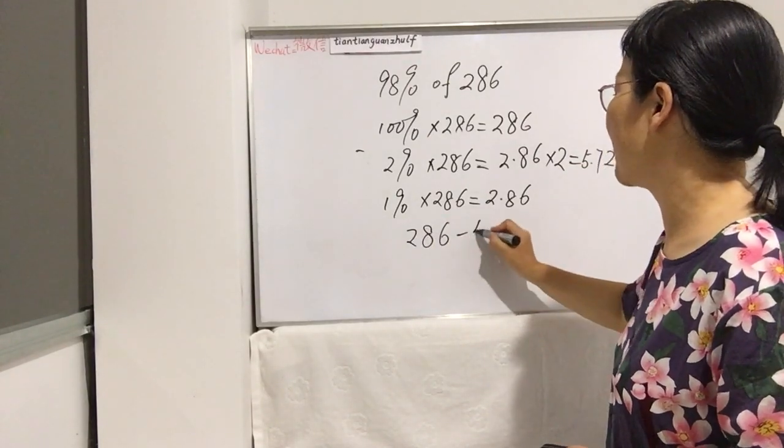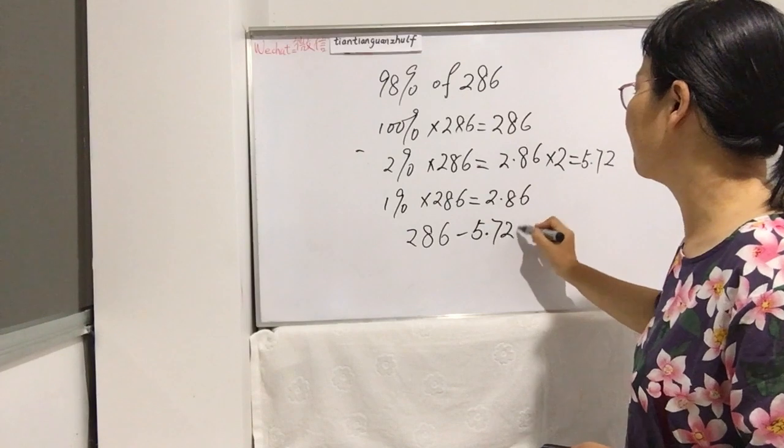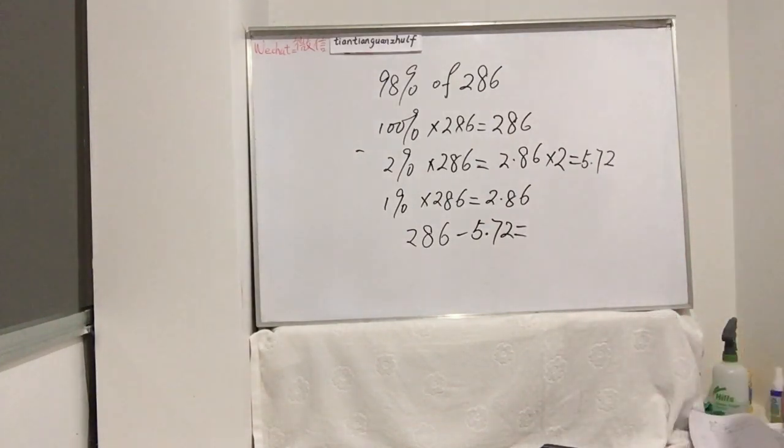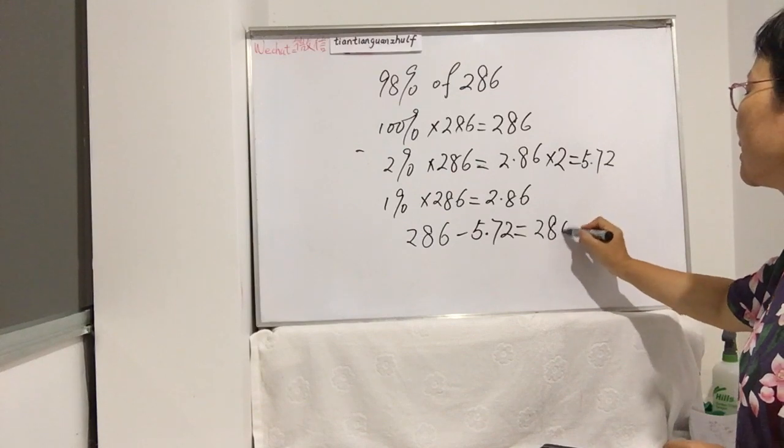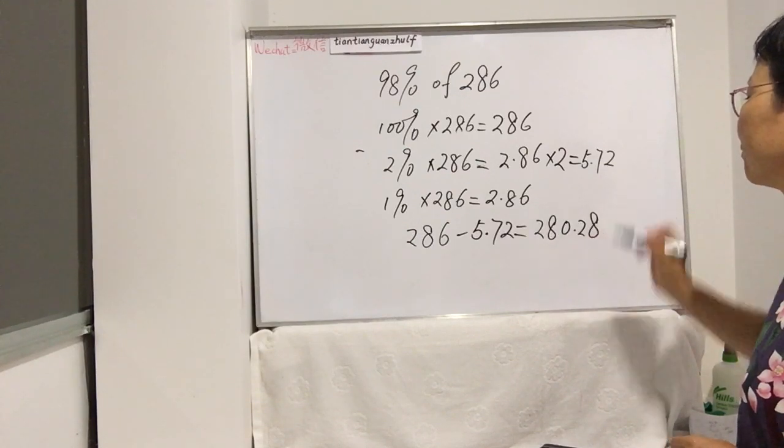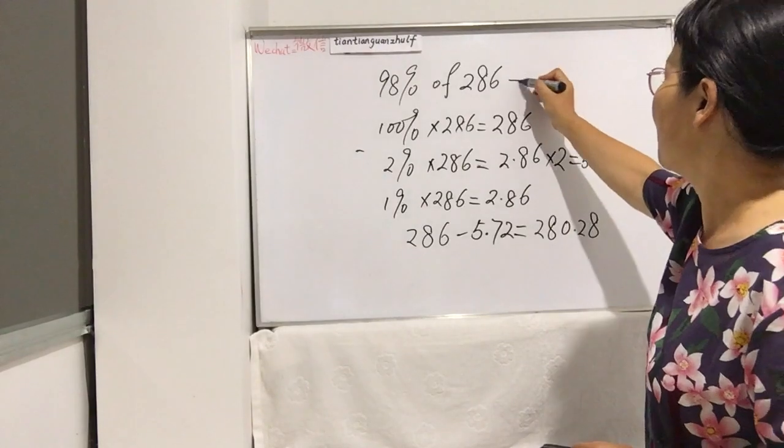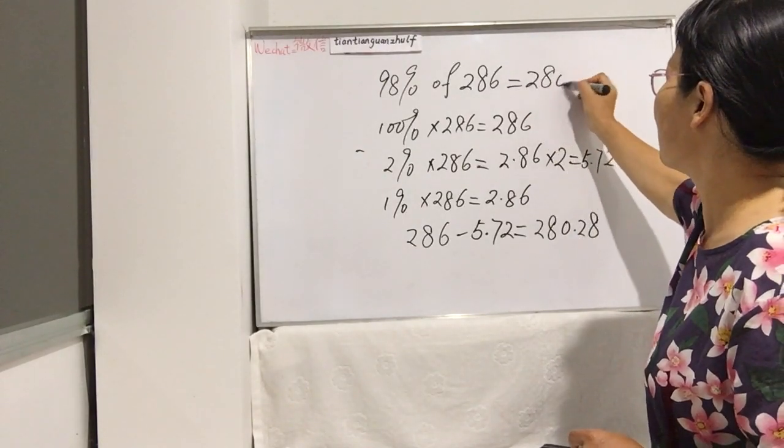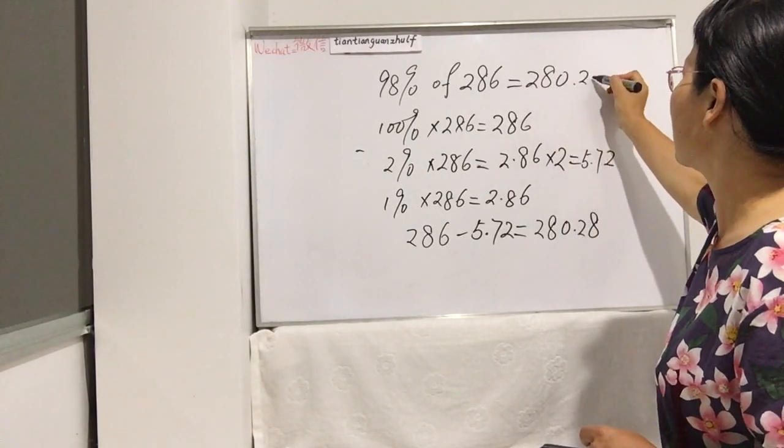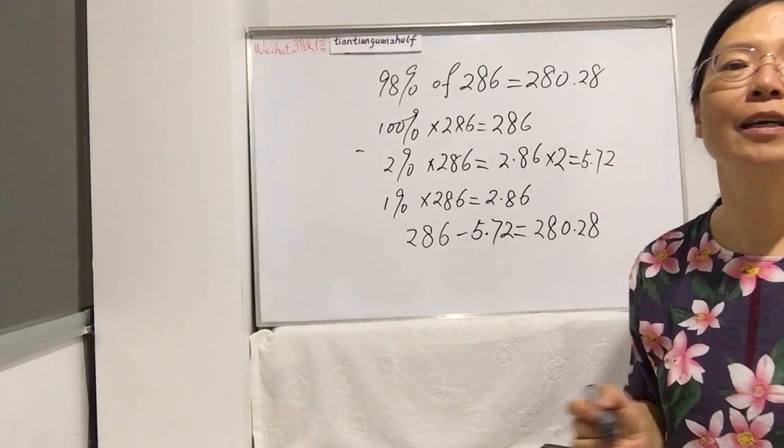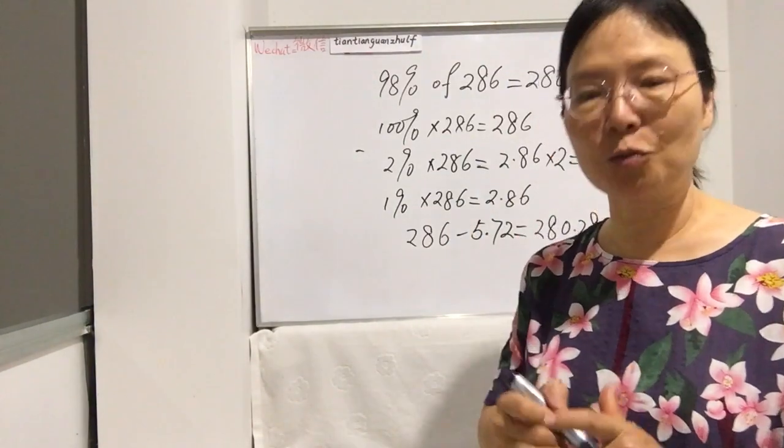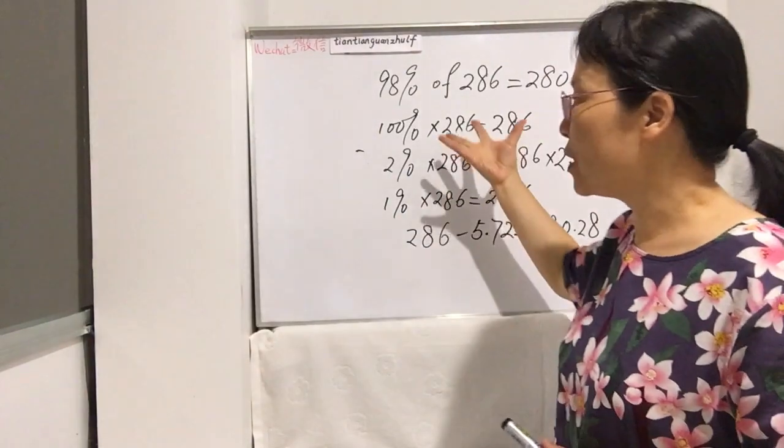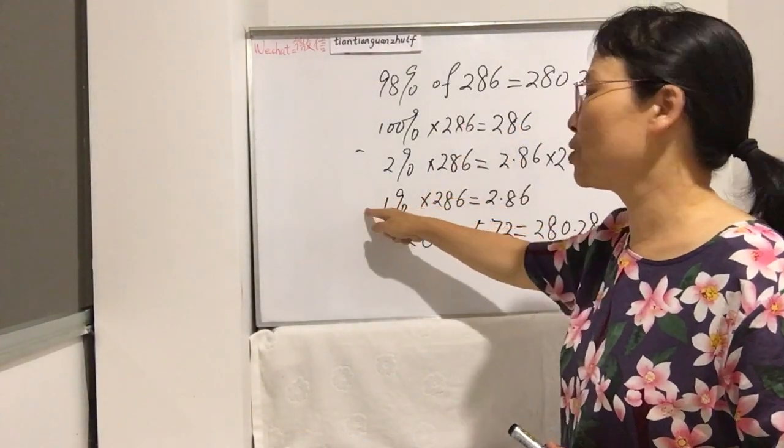And now our answer is 286 minus 5.72, so the answer is 280.28. So this is our answer for this work.